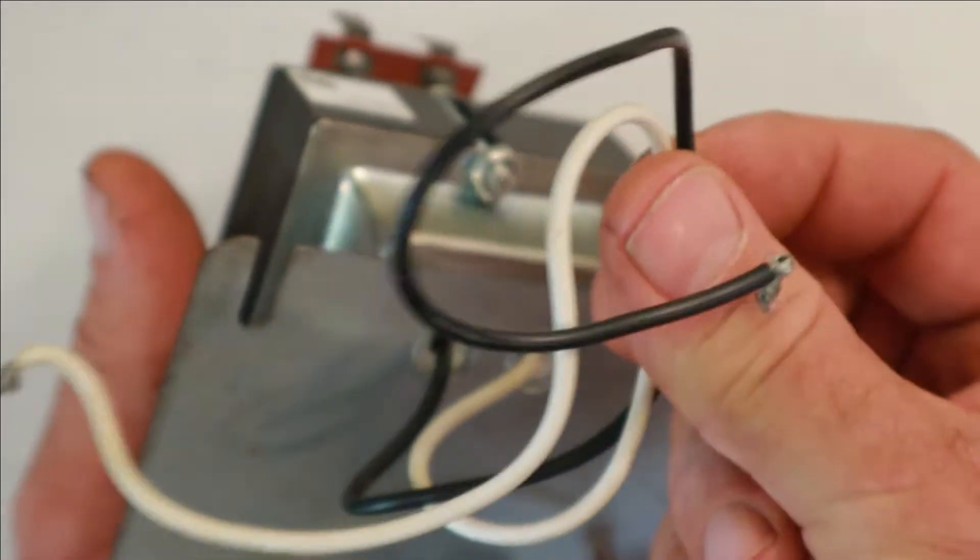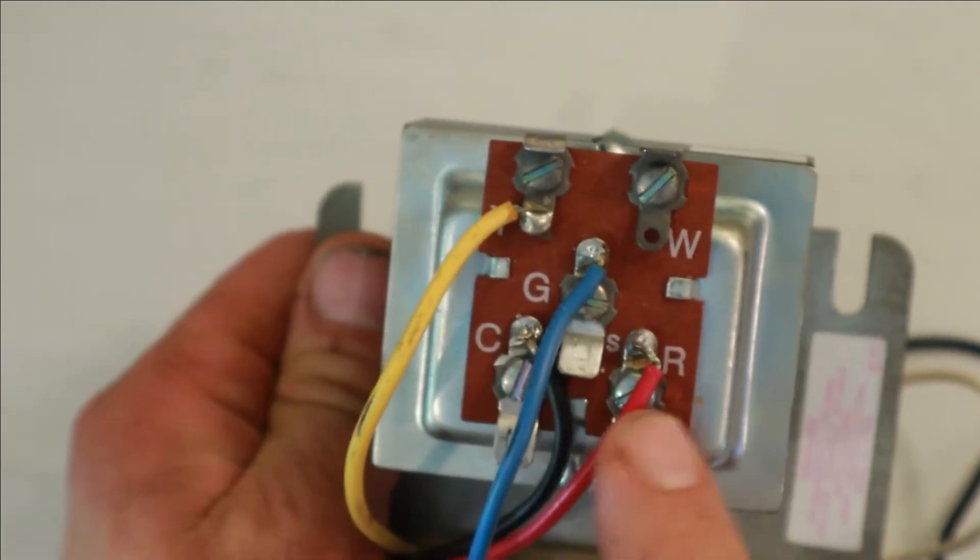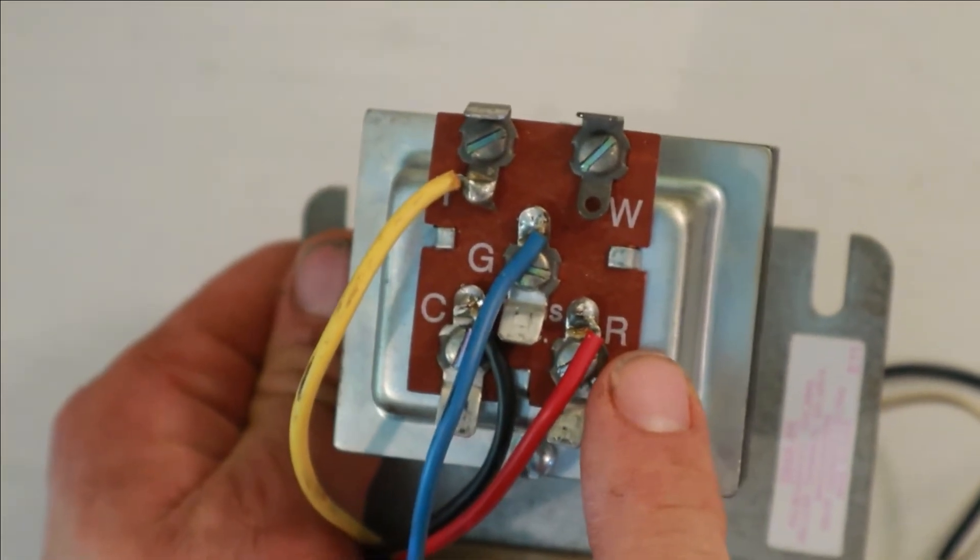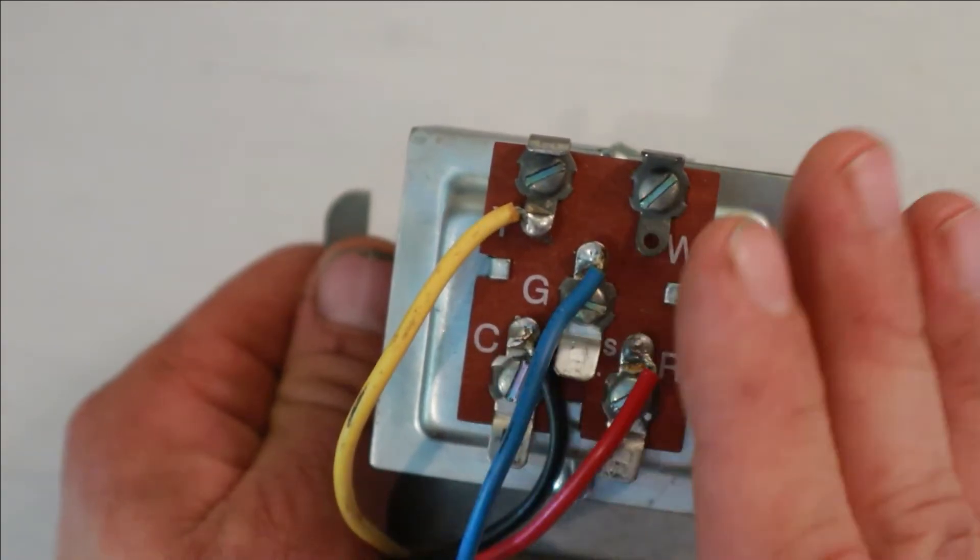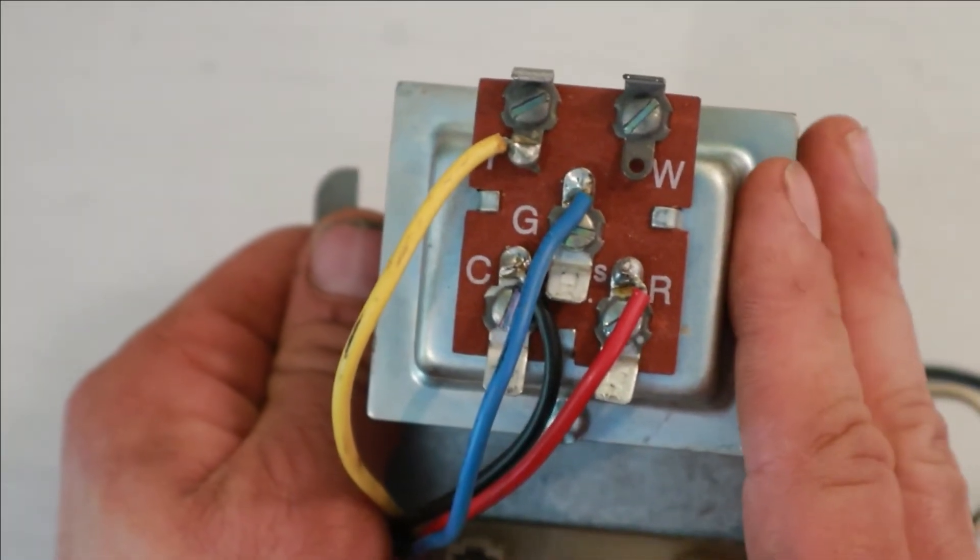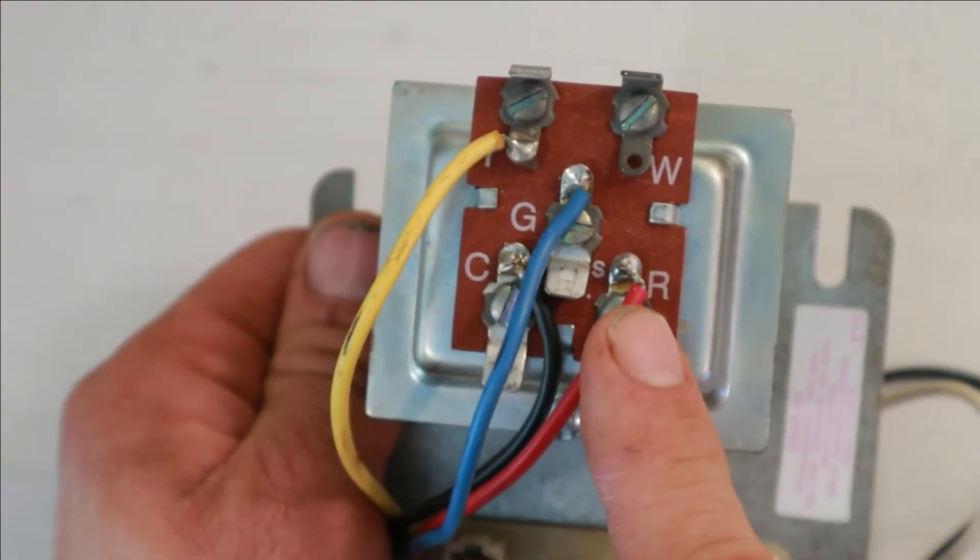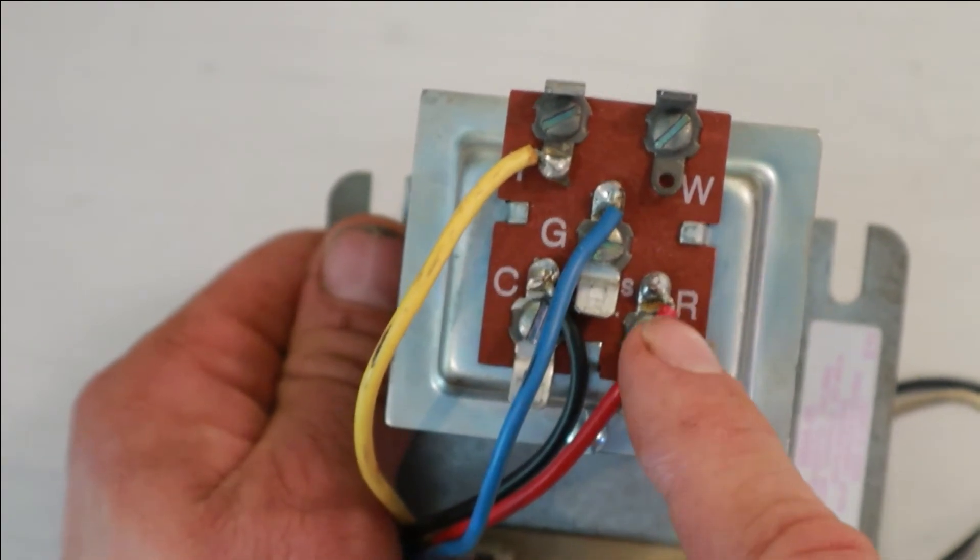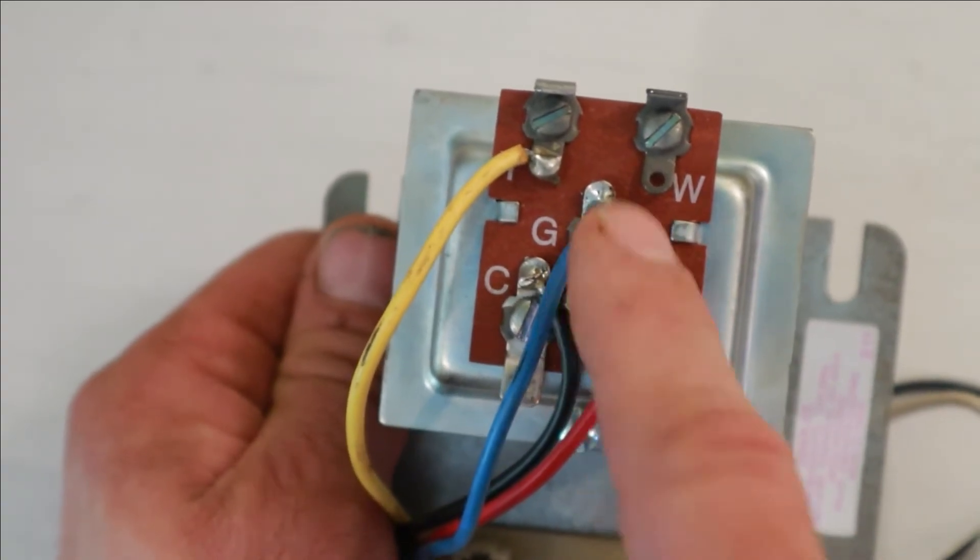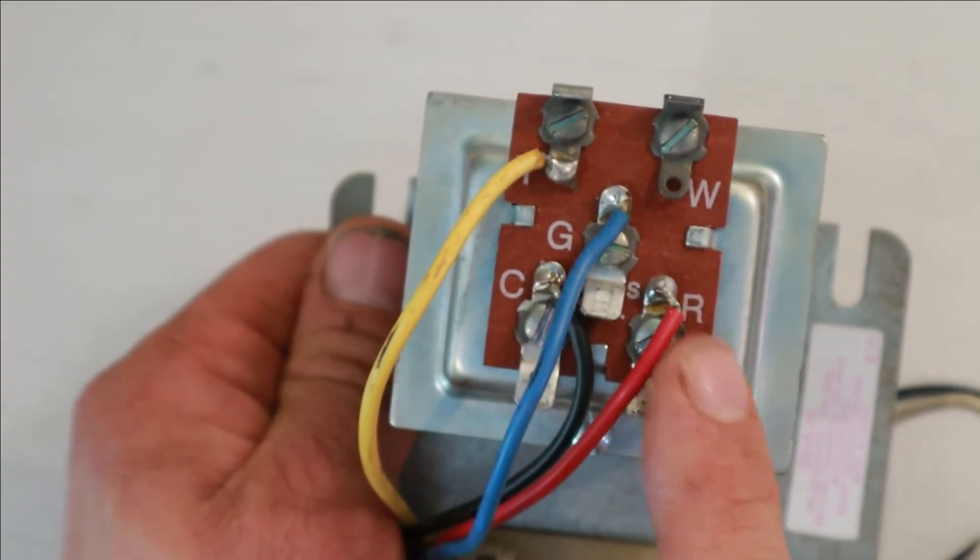So here we have our transformer on the backside. We have our black and white wires where we hook up our 120 volts. The R terminal is where the power originates on our low voltage control system. So all of these other terminals, none of them are powered directly from the transformer itself. It's just the R terminal that's powered. Now when you do have power at any of these other terminals, it's coming from here. It's just going through the circuit and coming back. So everything starts right here.